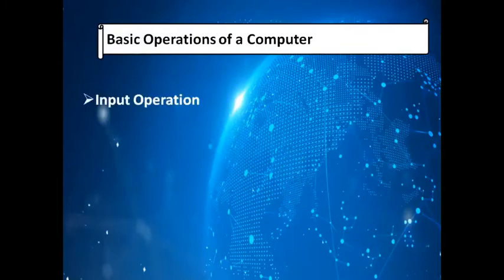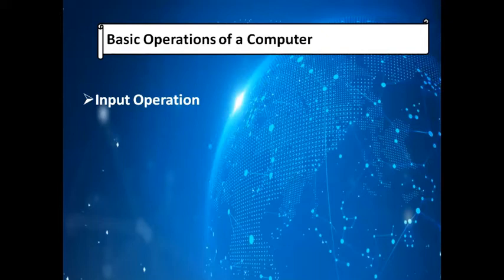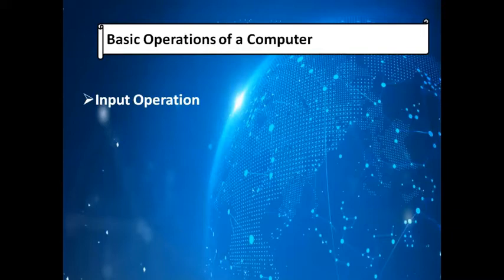The next topic is the basic operations of a computer — how a computer executes instructions. Input means entering any data and instructions into the computer. With the help of input devices like keyboard and mouse, we enter data — this is called the input operation, which means accepting data for processing from an input device. The mouse is a pointing device used to select items, and the keyboard is used to enter text and data. Other input devices include webcam, digital camera, CD, and USB.